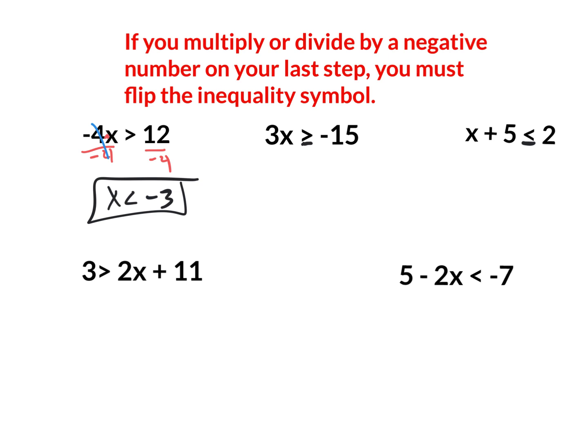This next one: how do I get rid of the multiplication of 3 in front of x? Divide by 3. Am I dividing by a negative? No. So I'm not going to flip the symbol — it stays the same. The answer is x ≥ -5.